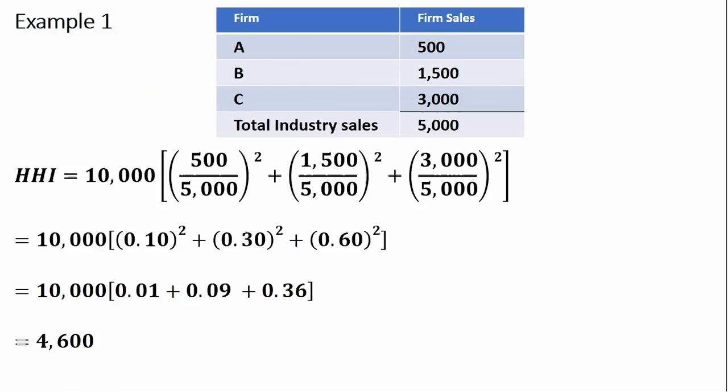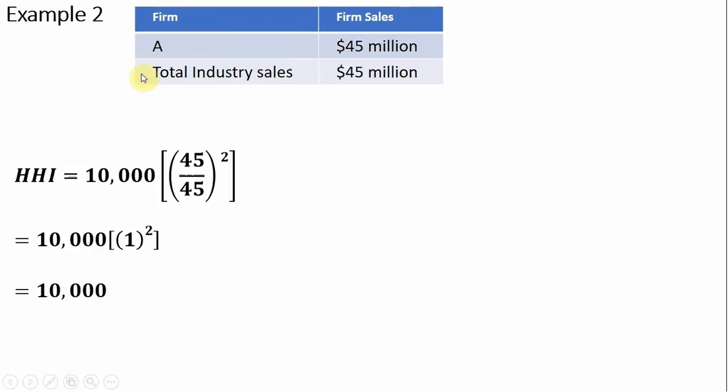Let's do another example, a simpler example. We have one firm in an industry. This firm has $45 million in sales. The total industry sales, then, are $45 million. So the Herfindahl-Hirschman Index in this example is going to be just simply 10,000. We have one firm that accounts for 100% of the industry sales. So the Herfindahl-Hirschman Index, again, is 10,000.